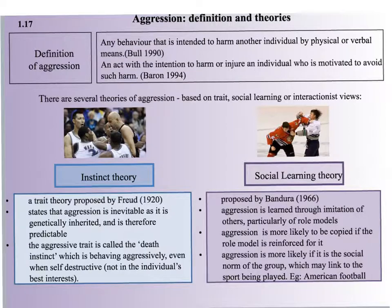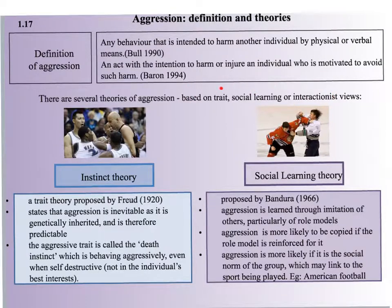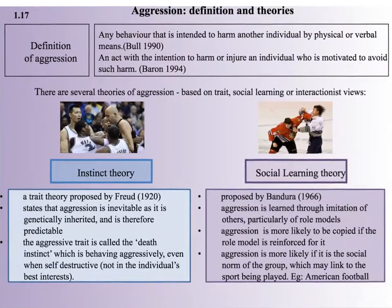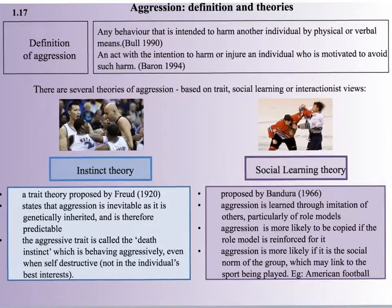The four theories we need to look at are the instinct theory, the social learning theory, the frustration-aggression hypothesis, and the aggressive cue hypothesis. All theories of aggression are based on the trait, the social learning, and the interactionist views — similar to what we've seen with personality. We'll start with the instinct theory.